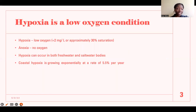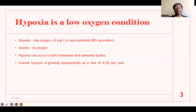So what is hypoxia? Hypoxia is a low oxygen condition. To put a number on it, it is approximately 30% saturation of oxygen, which is rather low. When hypoxia is really, really bad and the oxygen level is reduced to nothing, that is anoxia — oxygen is completely depleted. That is the phenomenon of anoxia.